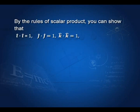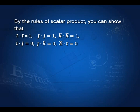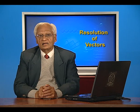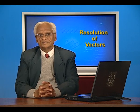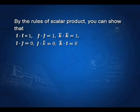By the rules of scalar product, i-cap dot i-cap equals 1, because it is 1 times 1 times cosine of 0 degrees, which is 1. Similarly, j-cap dot j-cap equals 1 and k-cap dot k-cap equals 1. On the other hand, i-cap dot j-cap equals 0 because the angle between them is 90 degrees and cosine of 90 degrees is 0. Therefore i-cap dot j-cap equals 0, j-cap dot k-cap equals 0, and k-cap dot i-cap equals 0.